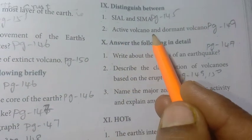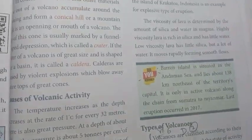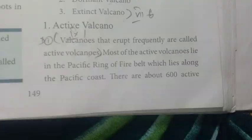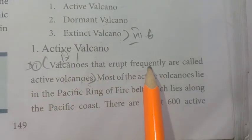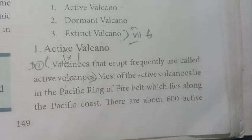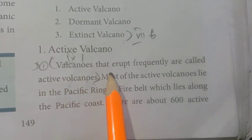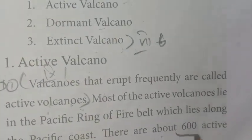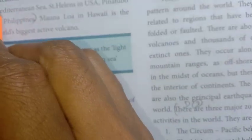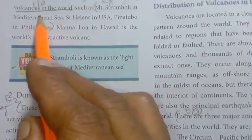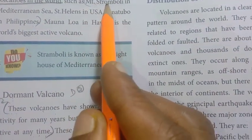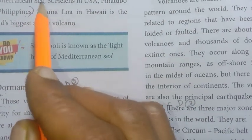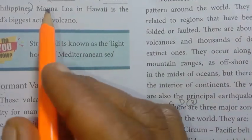Next: Active volcano and dormant volcano, page number 149. Active volcano — volcanoes that erupt frequently are called active volcanoes. There are about 600 active volcanoes in the world. Examples: Mount Stromboli in the Mediterranean Sea, Mount St. Helens, Pinatubo, and Mauna Loa.